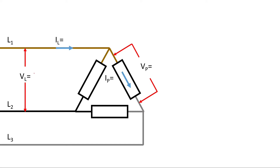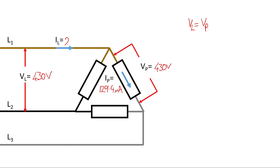So on the screen we've got our delta connected load drawn out and we can fill in our individual voltages and currents. We measured a line voltage of 430 volts and we measured the phase voltage across the load as also being 430 volts. So for the sake of thoroughness we write down the relationship: in a delta connected load the line voltage VL is equal to the phase voltage VP - they are exactly the same value. Now putting in our currents: the phase current through the load we measured as 129.4 milliamps, and the line current through the supply line we measured at 225.1 milliamps.